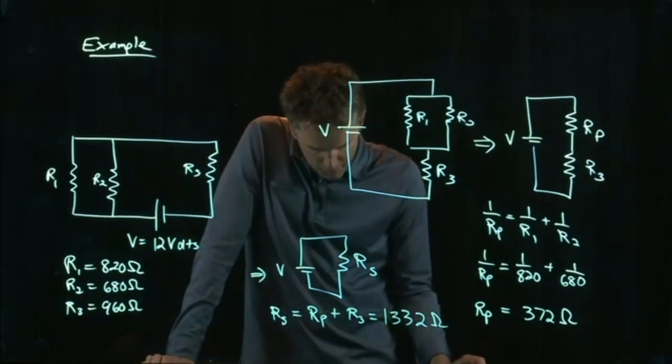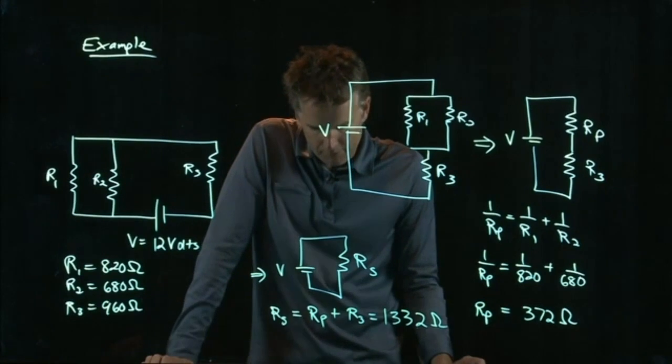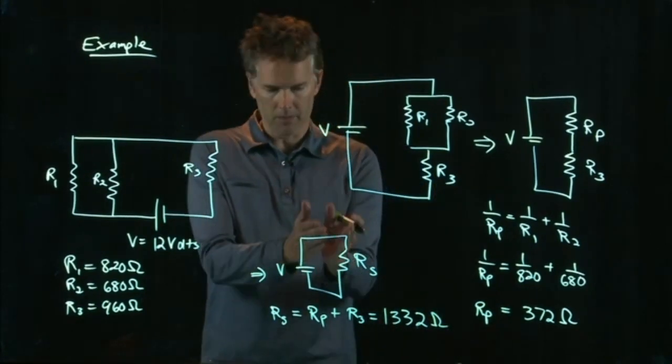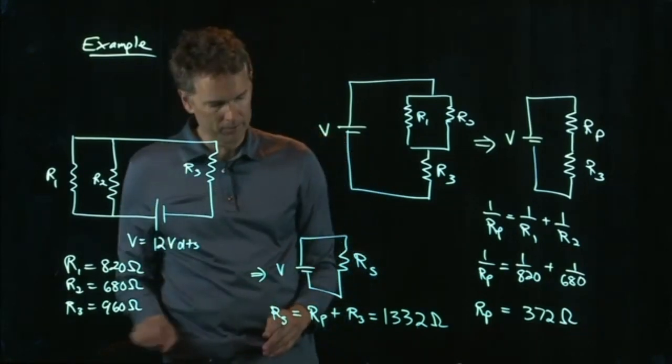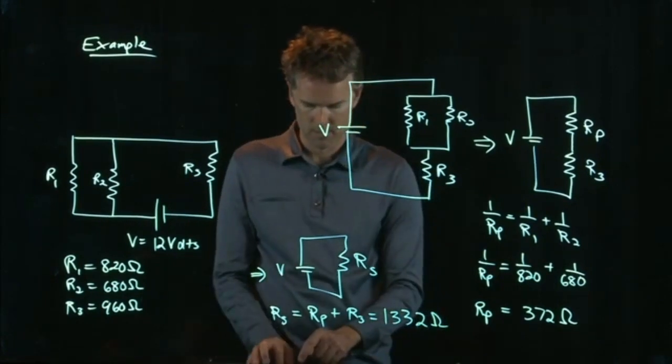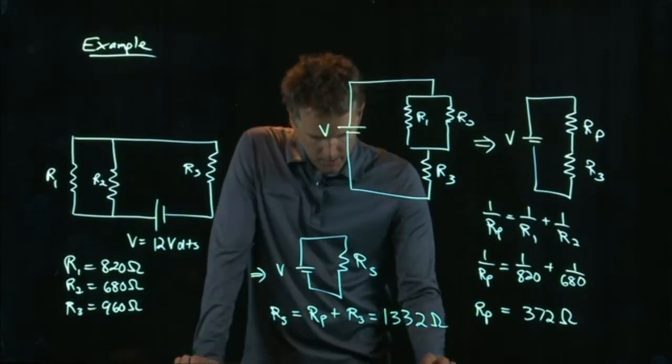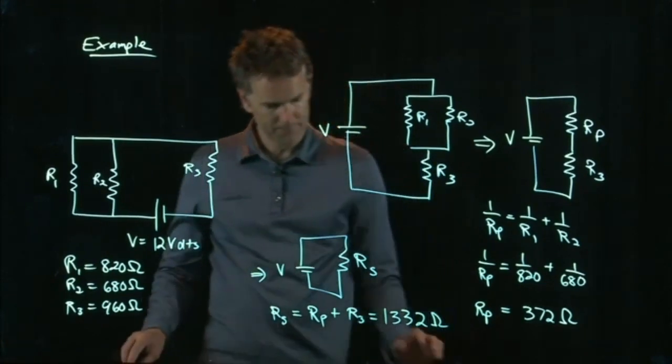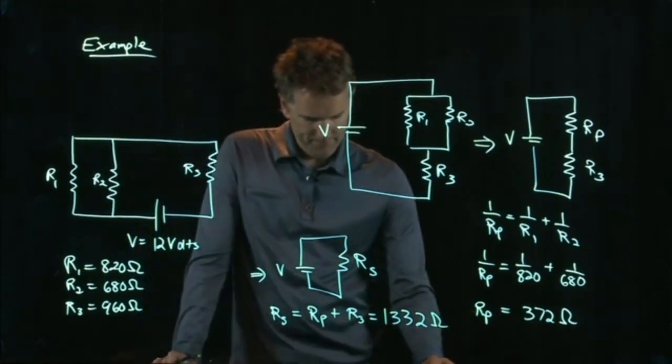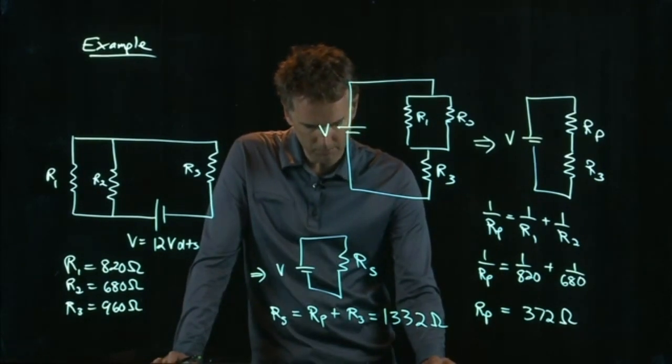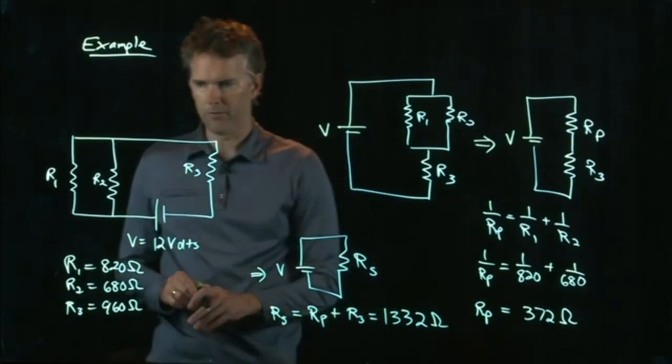All right, the first question was, determine the equivalent resistance of the circuit. That's this. Once you get down to the simple circuit, whatever that resistor is that's left, that is the equivalent resistance. Should we plug it in and try it? 1332. And the units are ohms. We've got to go to the symbol guy. There it is. And we submit it. And it says, correct. 1332 ohms. All right, so that was the first part.